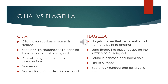Cilia are present in organisms such as paramecium, while flagella are found in bacteria and sperm cells. Cilia are numerous in number, but flagella are fewer in number. Both non-motile and motile cilia are found, whereas bacterial, archaeal, and eukaryotic flagella are found.